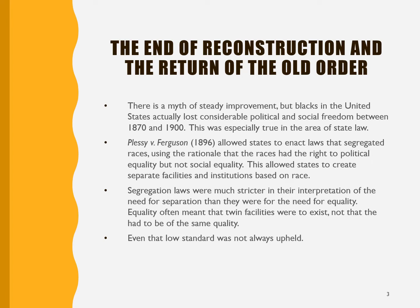Plessy versus Ferguson was a case that in many ways was not seen originally as a major case. What it really did was it accepted the social order as it was at the time. But the court set out a rule, a doctrine, which was used for many years to justify de jure, or by law, discrimination in the United States. Plessy versus Ferguson allowed states to enact laws that segregated, saying that the races had a right to political equality, but not social equality. Many of you have heard the term separate but equal.